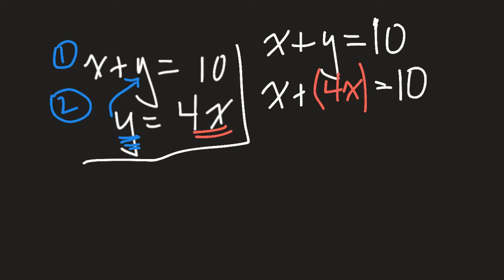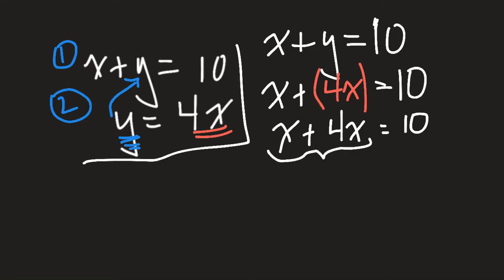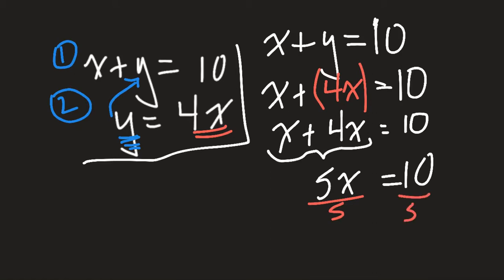Now I'm going to break it out of brackets, and because it's plus one beside it, it's easy and straightforward. This becomes x plus 4x equals 10. I can simplify: 1x plus 4x makes 5x equals 10. I can further isolate now by dividing by 5 on both sides. The two fives cancel out, and we get 10 divided by 5 equaling 2 — so x equals 2.